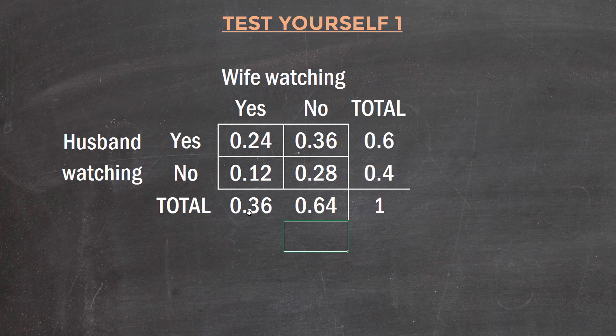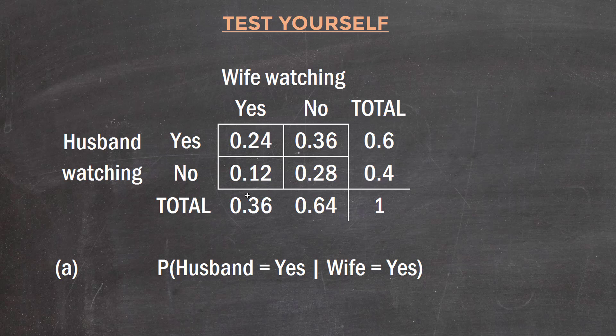I filled in my entire table without even looking at the exact questions. Now I can answer any question. The first is: find the probability that if the wife is watching HBO, the husband is also watching. That's a conditional probability: 0.24 divided by 0.36, which equals 0.6667.